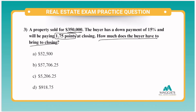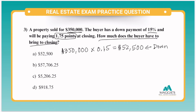Here it gives us how much the property sold for and a down payment percentage. So let's find out how much the down payment is. We're going to take $350,000 and multiply it by 15% to find the down payment. So that's going to equal $52,500. That is the down payment. Now that we have the down payment, we can easily find the loan amount by subtracting: $350,000 minus $52,500 gives us a loan amount of $297,500.